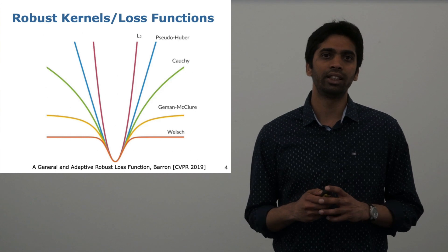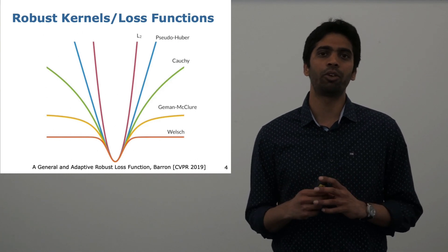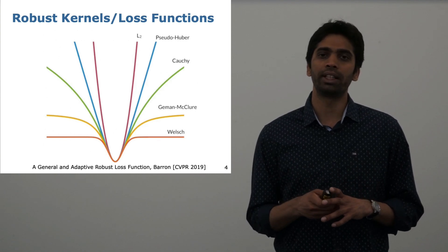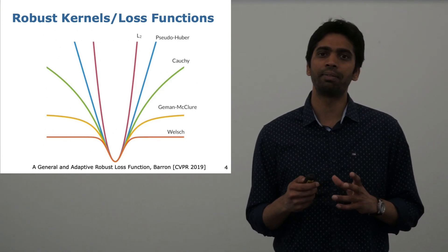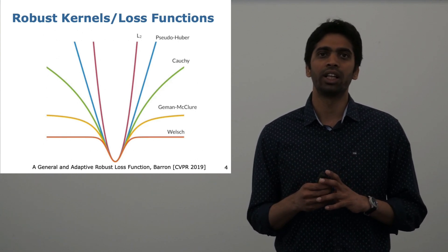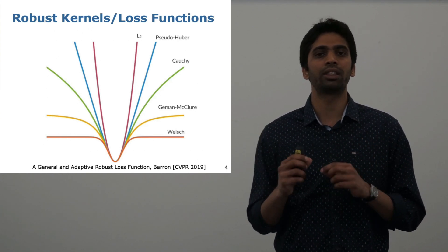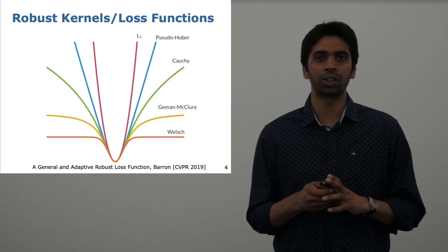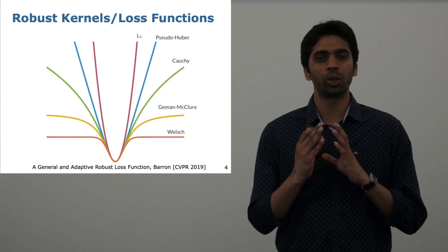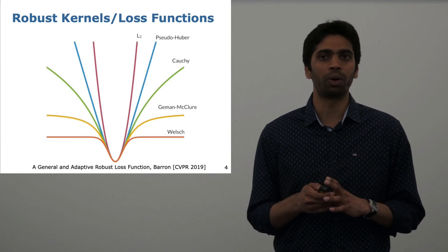Over the years, people have come up with alternative loss functions to the squared error. For example, the Huber, Cauchy, Geman-McClure, or Welch, each of which have a subquadratic loss which penalizes the outliers much lower than a quadratic cost would. In a way, this helps to avoid the solution moving far away from the actual one.